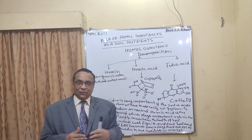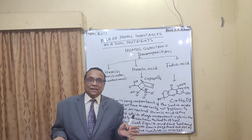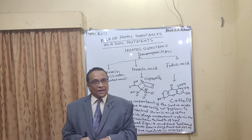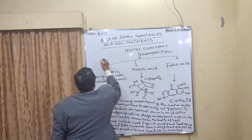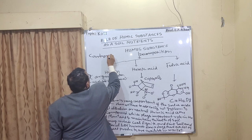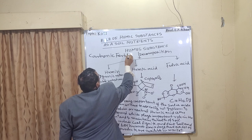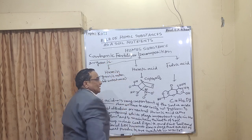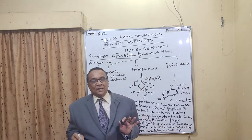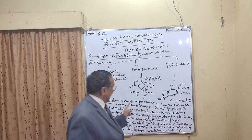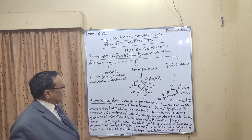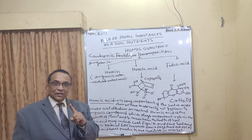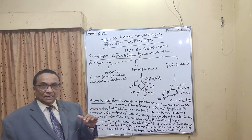Humic acid and fulvic acid are actually the main components — the main ingredient of carbonic fertilizer, which I call carbonic fertilizer. This is organic in nature and very, very important. Humic acid is very important, but if the soil is acidic, then humic acid is not going to work unless the soil is alkaline or neutral. So for that, if your soil is having less than 7 pH — between 6 and 7 — you have to apply calcium carbonate.